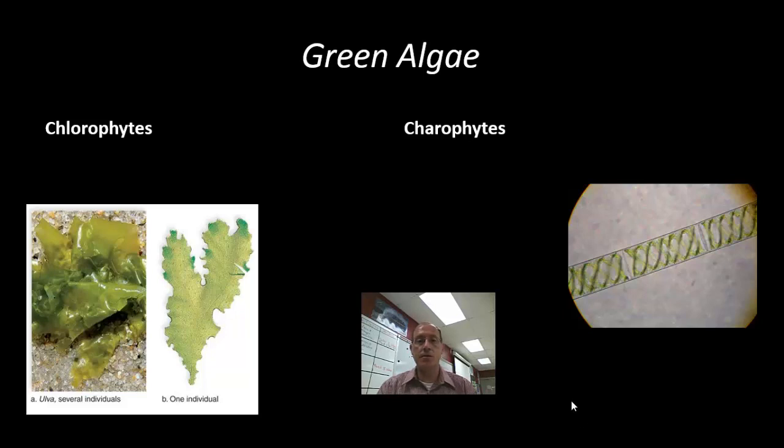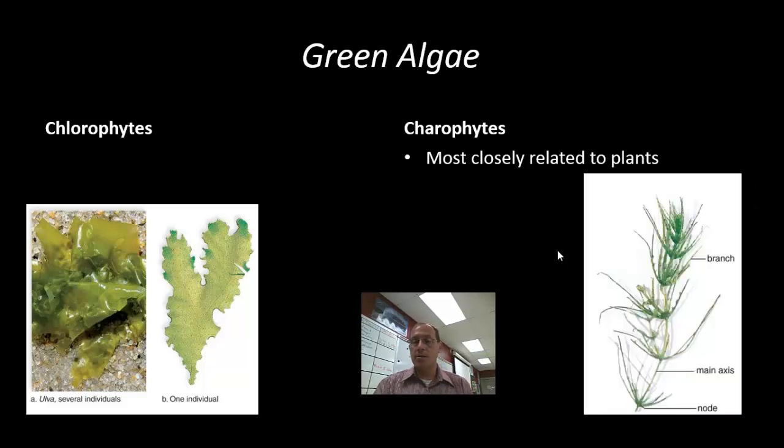And so green algae can be divided into two groups called the chlorophytes and the charophytes. And so both of them include both single-celled and multi-celled organisms. An example of the chlorophyte here is what is called ulva, or more commonly referred to as sea lettuce. And then amongst the charophytes, we find the spirogyra, and then we also see an organism, also included in this group would be an organism called the stonewort. And so this one is what scientists believe to be one of the most closely related organisms to plants. And so of the two groups, charophytes is considered to be more closely related.